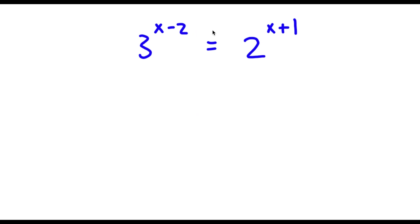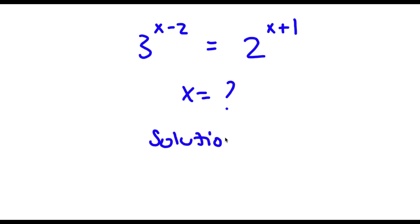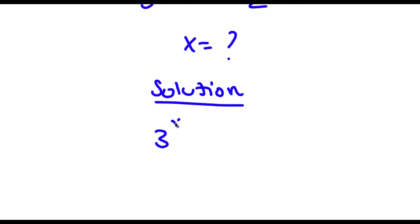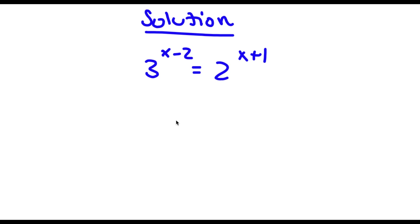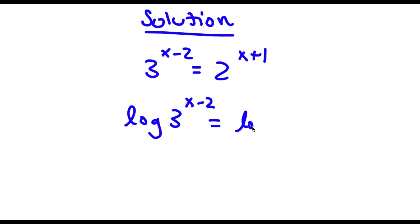Alright, so I have 3 to the power of x minus 2 is equal to 2 to the power of x plus 1. I want to find the value of x. For my solution, I start with 3 to the power of x minus 2 is equal to 2 to the power of x plus 1. Now I'm going to take the log on both sides. So now I have log of 3 to the power of x minus 2 is equal to log of 2 to the power of x plus 1.